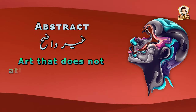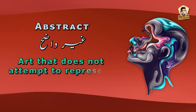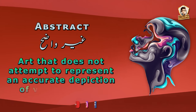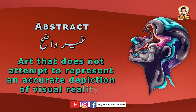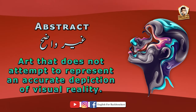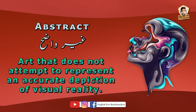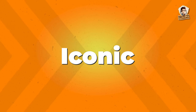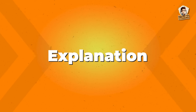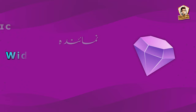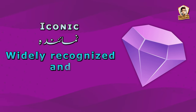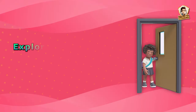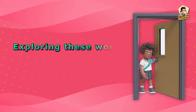Abstract refers to art that does not attempt to represent an accurate depiction of visual reality. The fifth and final word of today's video is 'iconic' — in Urdu we call it 'mashhoor'. Explanation: iconic means widely recognized and well established as a symbol. Exploring these words opens a door to the world of art and culture.